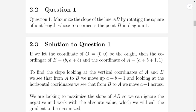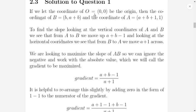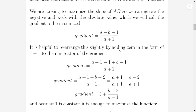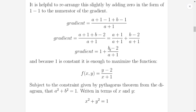Question 1: maximise the slope of the line A, B by rotating the corners. If we let the coordinate O be (0, 0), then the coordinate of B is (b, A+B), and the coordinate of A is (A+B+1, 1). Finding the slope from the vertical coordinates of A and B, we see that from A to B we move A+B minus 1. The gradient is A+B minus 1 over A+1. Doing a little trick and adding 0 in the form of 1 minus 1, we get A+1 minus 1 plus B minus 1, and that simplifies to 1 plus B minus 2 over A plus 1.